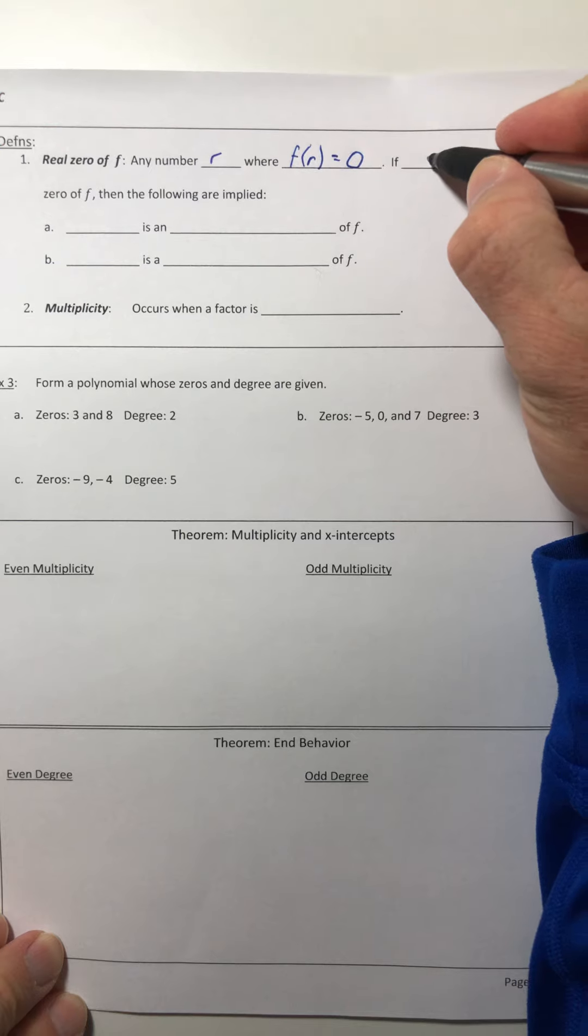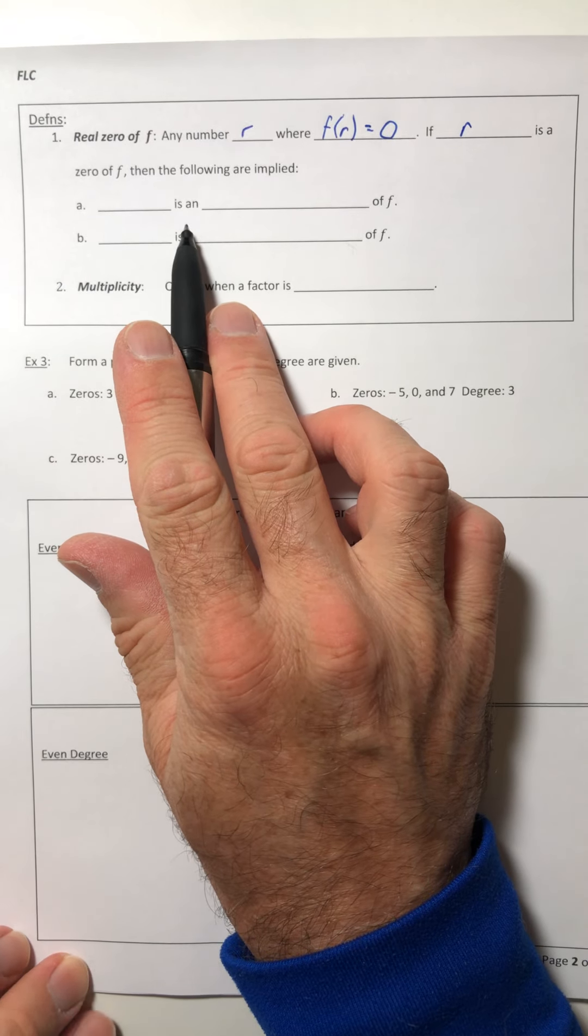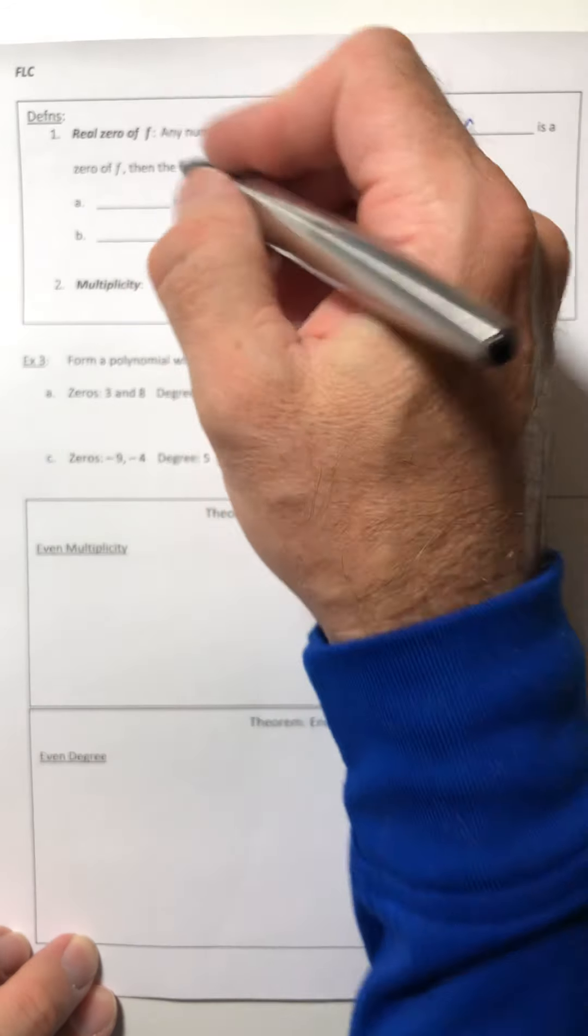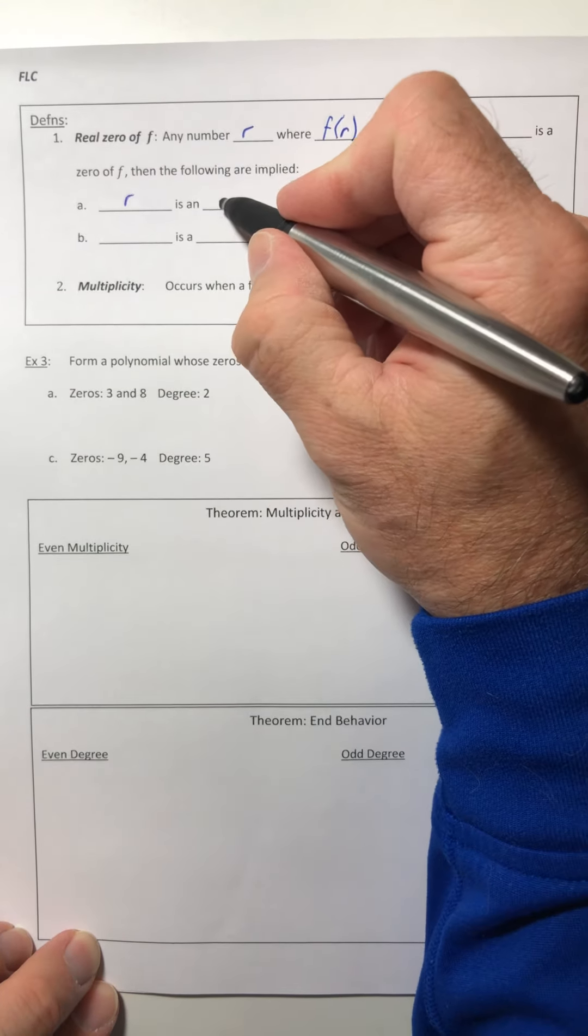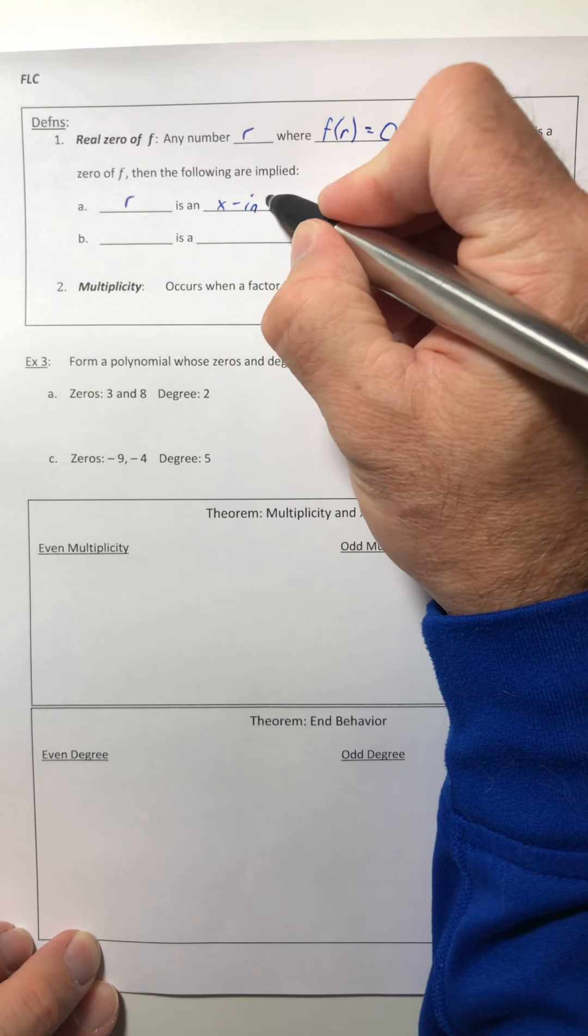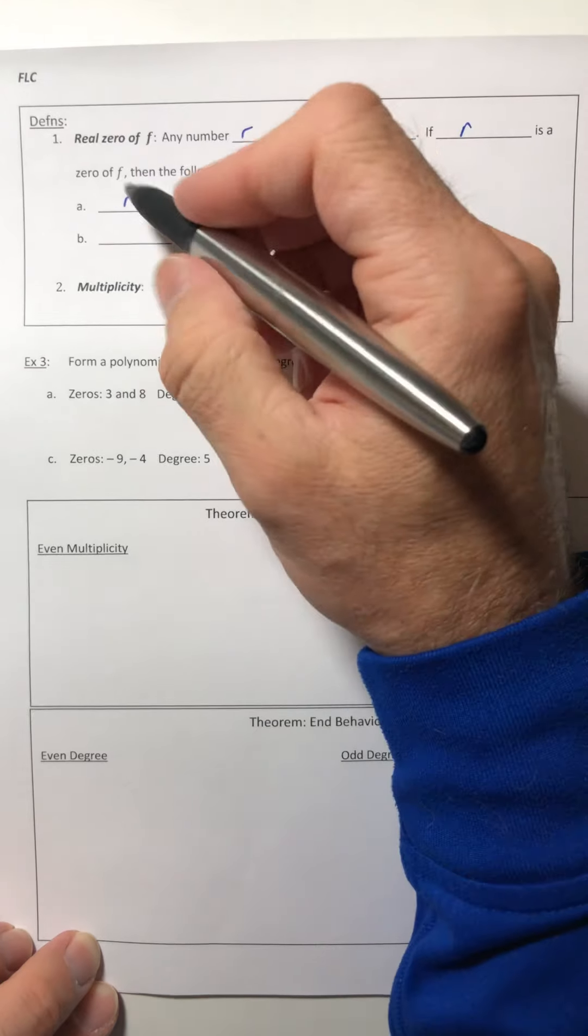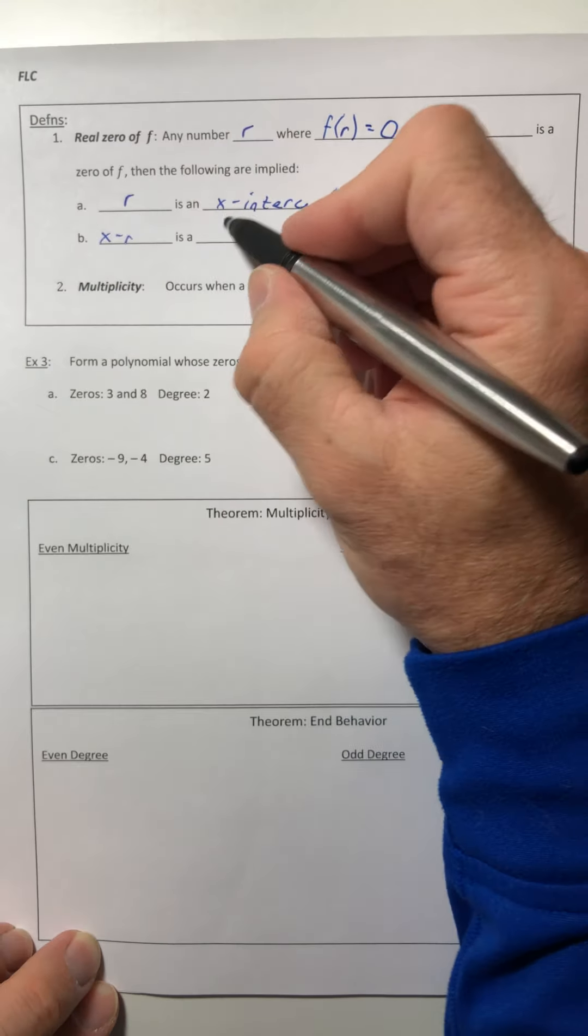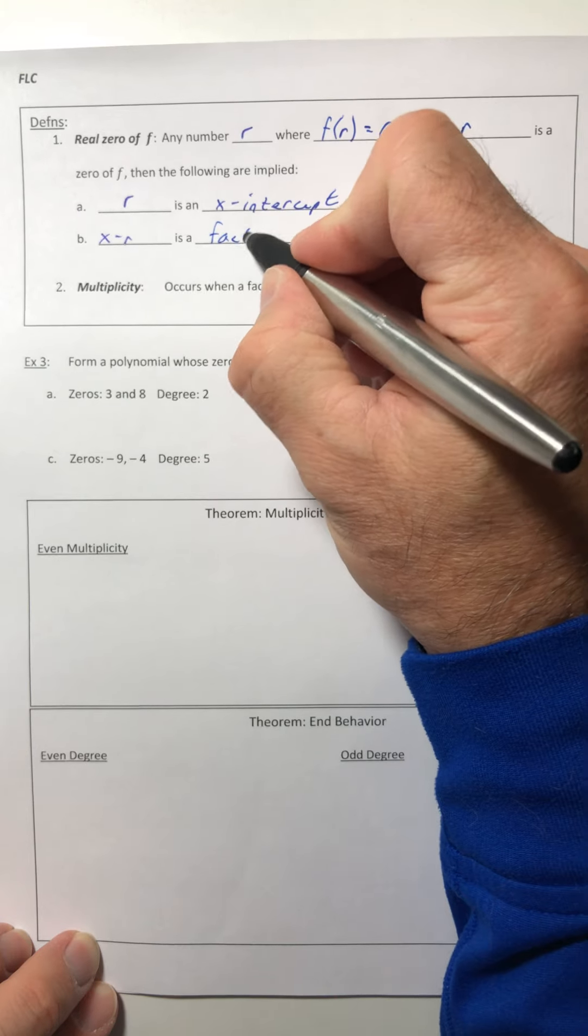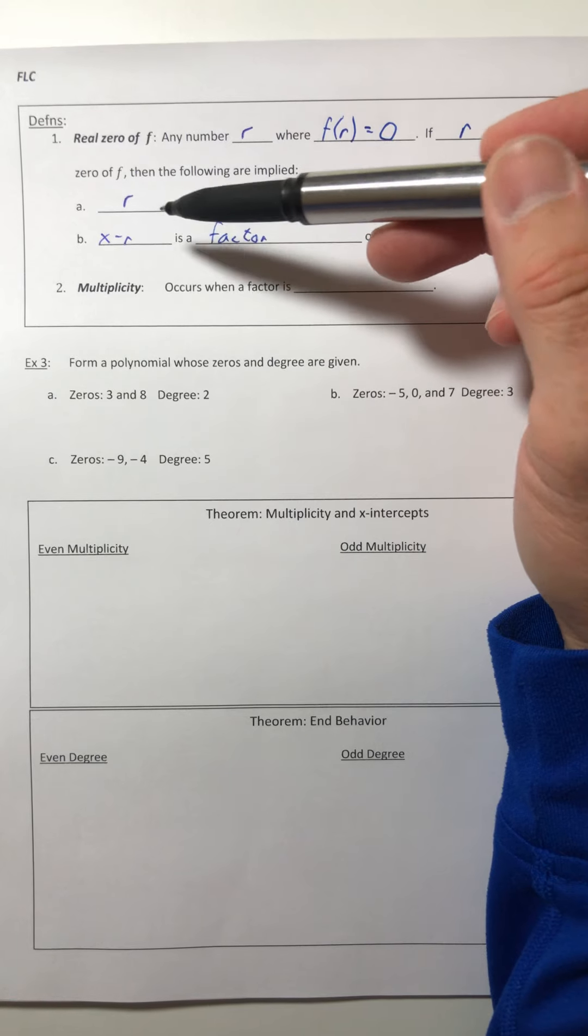So if that r is a real zero of f, then the following are implied. So the first one is that r is an x-intercept of f, and then the second one that's implied is x minus r is a factor.